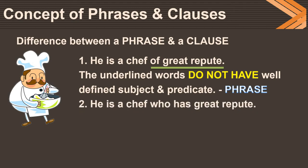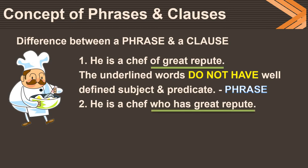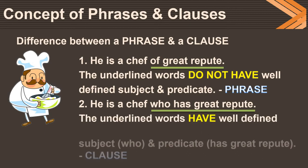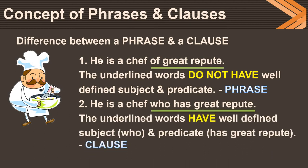Let's look at the second sentence: 'He is a chef who has great repute.' The meaning of the two sentences is not changed; however, the structure has changed. Here you find 'who has great repute.' In this group of words, there is a subject — 'who' — which stands for the chef. 'Has' is a verb, so 'has great repute' becomes a predicate. This group of words has a well-defined subject and predicate; therefore, it is a clause.